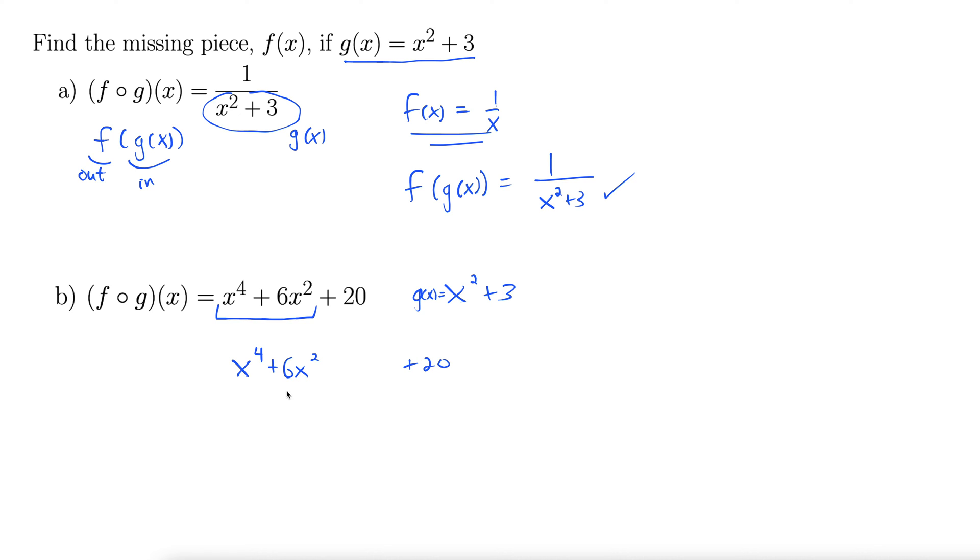Now I'm going to complete the square here, so I'm going to take the b term, or this middle term, divide by 2 and square it. So that's equal to what? 6 divided by 2 is 3, squared is 9. So I'm going to add 9 here and then subtract 9 there.